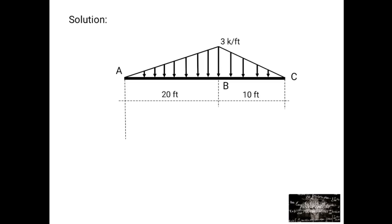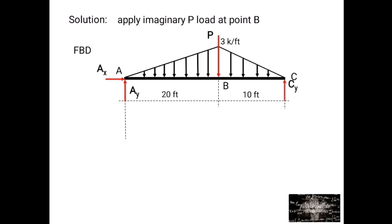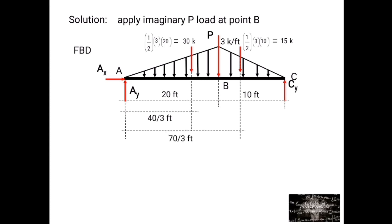Solution. To find the required deflection at point B, we need to apply an imaginary P load at point B. We have P, AY, AX, and CY. For the resultant of triangular loading along AB: one-half times 3 times 20 equals 30 kips at a distance of 40 over 3 feet from point A. And one-half times 3 times 10 equals 15 kips at a distance of 70 over 3 feet from point A.